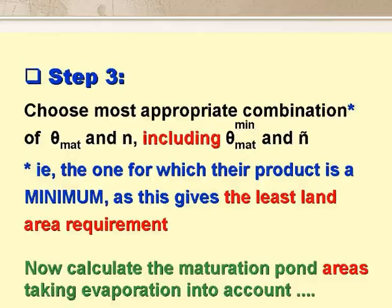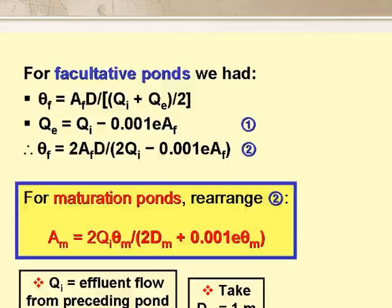We now calculate the areas of the maturation ponds, taking net evaporation into account. And we do this by rearranging the equation we had before for facultative ponds. Basically, we rearrange equation 2 to express it in terms of A, which is now AM, as shown in the yellow box on the slide. The value of QI that we use in this equation is the outflow from the preceding pond, that is, from the facultative pond in the case of M1, or from M1 in the case of M2, and so on. And this is given by equation 1 on the slide. And normally we take the depth of the maturation ponds as 1 metre.